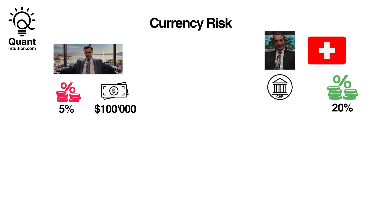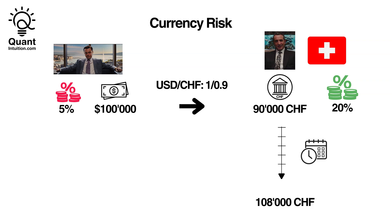Another common hedging application involves avoiding currency risk in international markets. Imagine you're a local businessman from the US seeking higher interest rates on your savings of $100,000. In your US bank you get 5% interest, but a Swiss bank offers significantly higher returns of 20% on deposits in Swiss francs. You transfer $100,000 to a Swiss bank account. The current exchange rate for USD to Swiss francs is 0.9, so you deposit 90,000 Swiss francs. Over one year, your position accumulates 20% interest on the 90,000 Swiss francs, resulting in a gain of 18,000 Swiss francs, giving you 108,000 Swiss francs total.